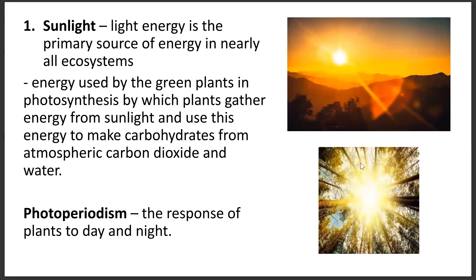Sunlight, or light energy, is the primary source of energy in nearly all ecosystems. It is the energy used by green plants during photosynthesis, by which plants gather energy from sunlight and use it to make carbohydrates from atmospheric carbon dioxide and water. We also have the term photoperiodism, which is the response of plants to day and night.